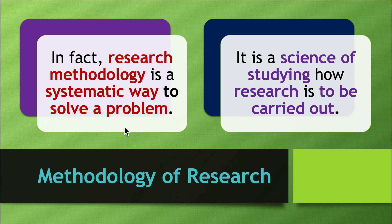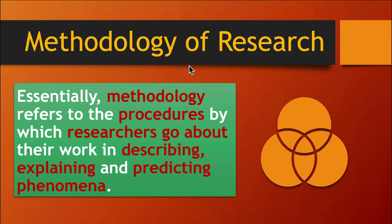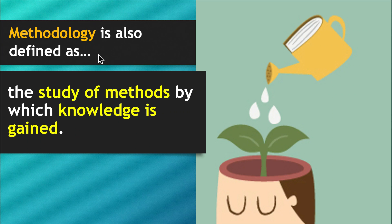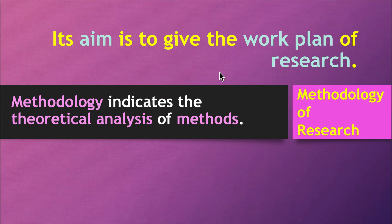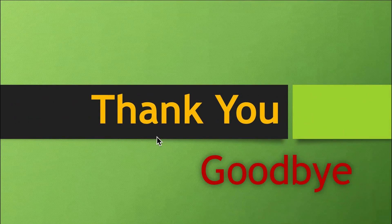Research methodology is a systematic way to solve a problem — it is the science of studying how research is to be carried out. Essentially, methodology refers to the procedures by which researchers go about their work in describing, explaining, and predicting phenomena. It is also defined as the study of methods by which knowledge is gained, and its aim is to give the work plan of research and indicate the theoretical analysis of methods.